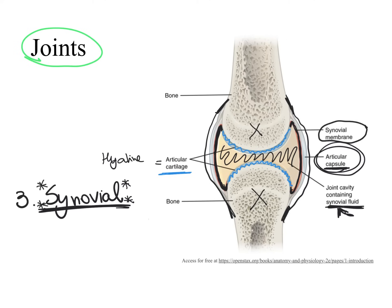The synovial fluid, if you could look at it, is very similar to uncooked egg white. Uncooked egg white slides a lot, and with this type of consistency, the synovial fluid provides a high degree of lubrication within the joint cavity. Consequently, bones in a synovial joint can move freely and quietly.